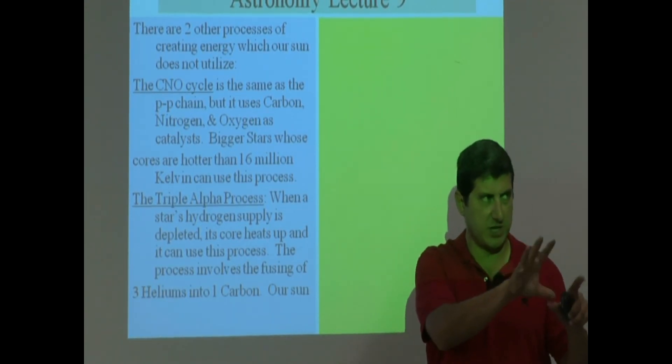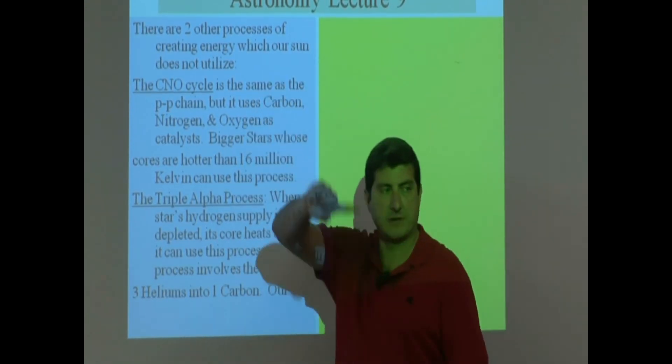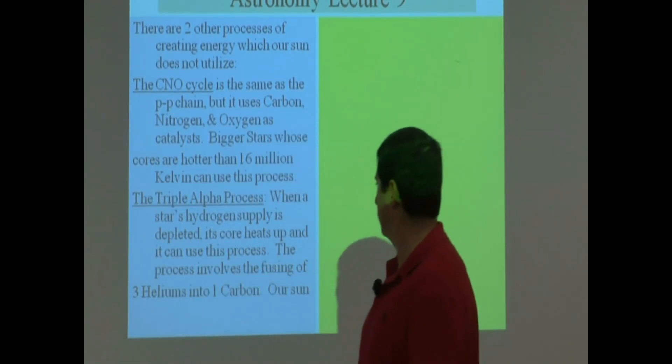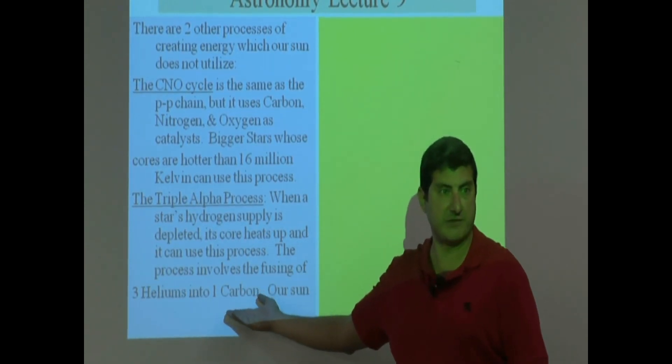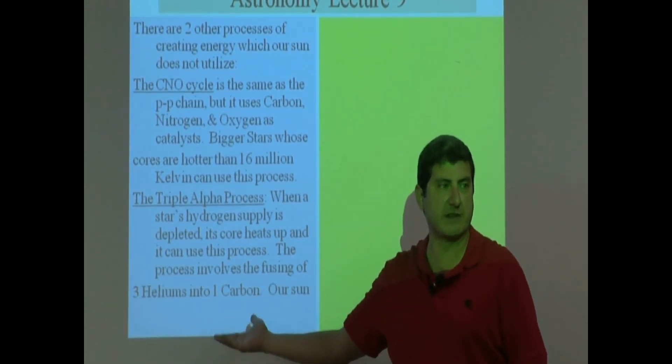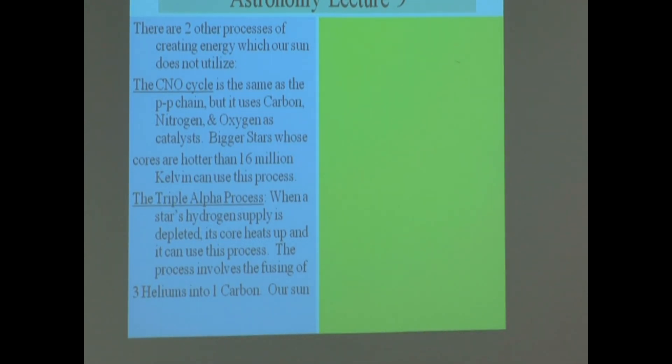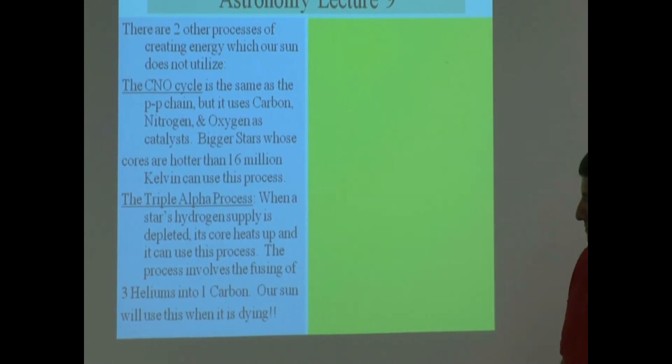So first notice, during its lifetime, it's taking hydrogen, fusing it into helium, and then it's taking helium, fusing it into carbon, and the carbon is the stuff of life. Remember earlier, I told you the stuff of life is made in the stars. It's taking helium and fusing it into carbon. Our sun will use this when it is dying, when it is in the process of dying.